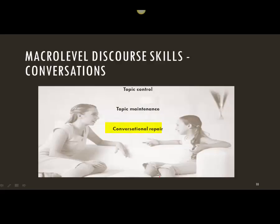We can observe how well the child repairs conversational mistakes or misinformation, how well the child monitors those problems, and what strategies the child uses to repair the conversation. We can also have some judgment about informativeness — how much important, relevant information is provided — or whether the child talks but is off-topic or produces tangential comments. We can also look at conjunctive cohesion, where the child uses conjunctions about time, about cause and effect, etc.